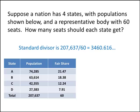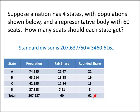We get our rounded shares by taking the fair shares and rounding them up. So 21.47 gets rounded up to 22, 18.38 gets rounded up to 19, and so on. As we see, we have 62 seats, which is more than the number of seats we have. So we can't use the standard divisor because that won't give us the right number of seats — we'll have to use a modified divisor.